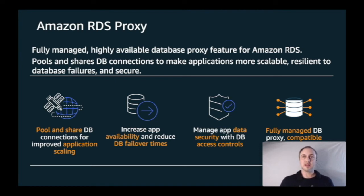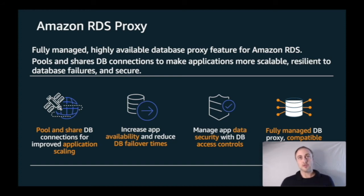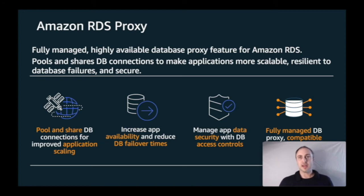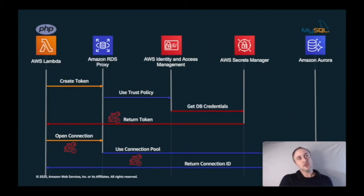RDS Proxy establishes a database connection pool that sits between your application and the relational database, and it reuses connections in this pool. This protects your database from over-subscription without the memory and CPU overhead of opening and closing a new connection each time. Credentials for the database are securely stored in AWS Secrets Manager and accessed by an IAM role, enforcing strong authentication requirements without costly migration effort.